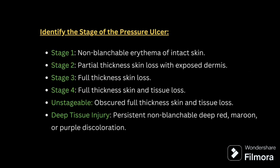When talking about the stage: Stage 1 is non-blanchable erythema of intact skin. Stage 2 is partial thickness skin loss. Stage 3 is full thickness skin loss. Stage 4 is full thickness skin and tissue loss. Unstageable is obscured full thickness skin and tissue loss. Deep tissue injury is persistent non-blanchable deep red, maroon, or purple discoloration.